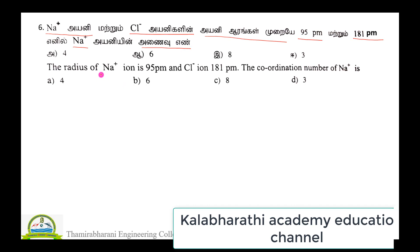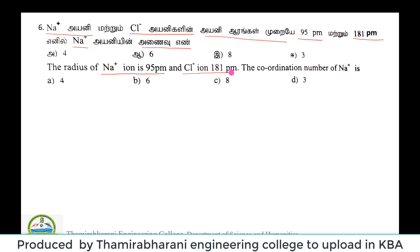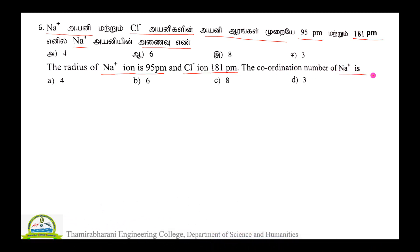In English, the radius of Na+ ion is 95 picometer and Cl- ion is 181 picometer. The coordination number of Na+ is asked.